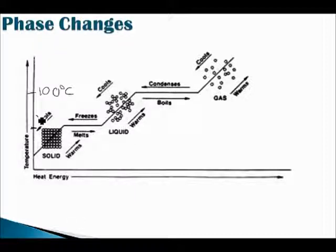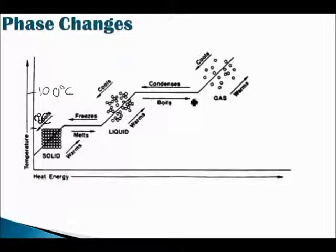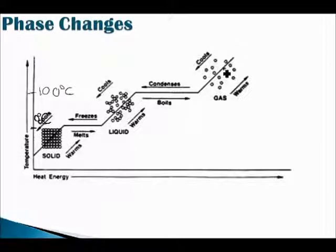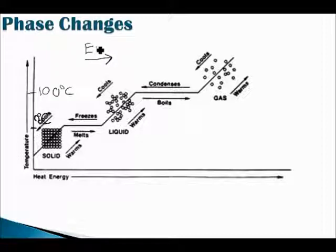As heat energy increases at this second plateau, temperature stays constant while bonds in the liquid are freed and it becomes a gas. For water, this happens at 100°C — that's the boiling point of water — and the freezing point is 0°C. The gas becomes water vapor. Going the reverse — taking energy out of the system — it loses kinetic energy, which becomes potential energy, so vapor condenses to a liquid, the temperature lowers, it freezes, and becomes an ice cube.